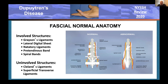The involved normal structures are Grayson's ligament and the lateral sheath in the digit, the natatory ligament in the web, the pre-tendinous band in the palm, and the spiral bands near the MP joint. Typically uninvolved structures are Cleland's ligaments, which are dorsal to the neurovascular bundles, and the superficial transverse ligaments of Skoog in the palm.